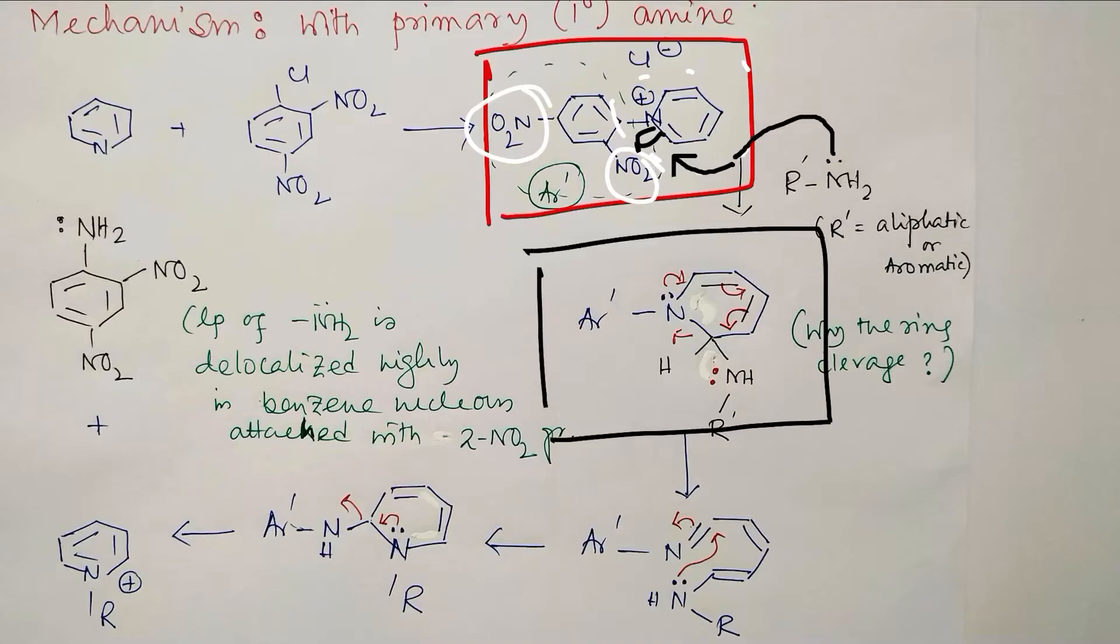In the next step what happens? This nitrogen lone pair pushes here, this double bond comes here, it comes here, it comes here, and this bond breaks. This is actually the ring cleavage. And question: why the ring cleavage occurs? In the next stage, actually this forms imine. And in the next step there is some stabilization. I will come, you will understand why the ring cleavage occurred. So after this ring cleavage here, see, an imine type moiety formed.